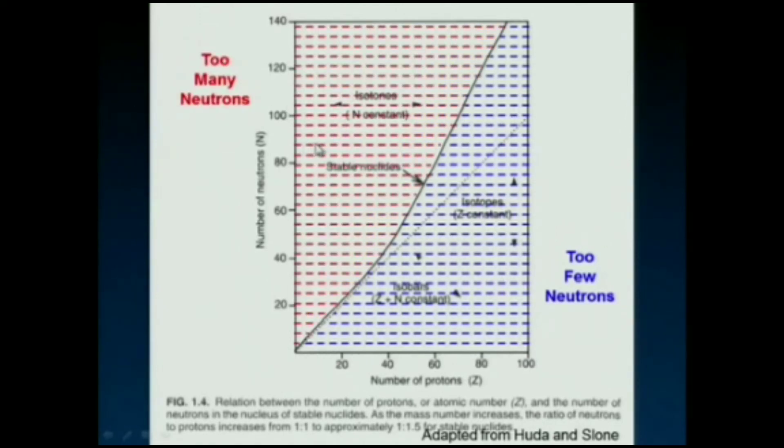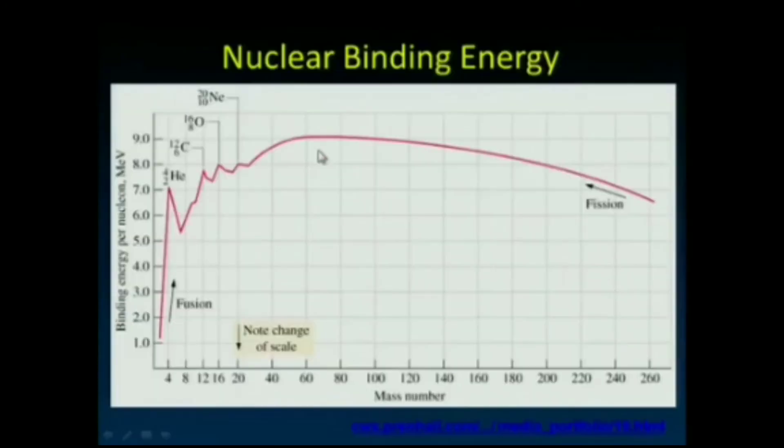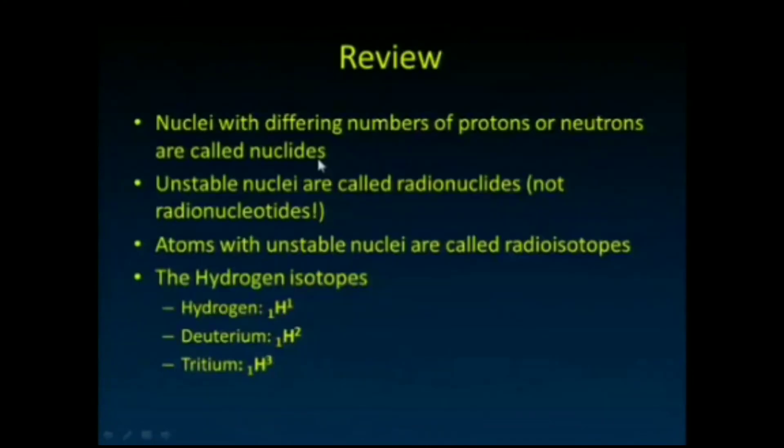Going back to that picture, these are the things that have too few neutrons or too many protons relative to neutrons, and these are the things that have too many neutrons or too few protons relative to neutrons. Here's that nuclear binding energy we talked about—the most stable thing sitting in this range. Things up in this range are really going to decay into that region to try and make things become more stable.